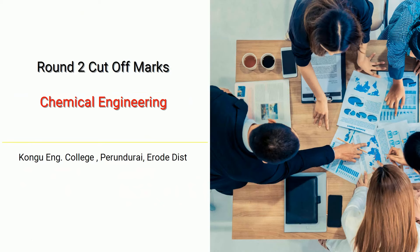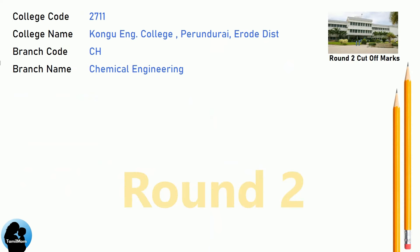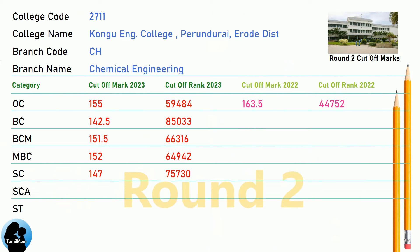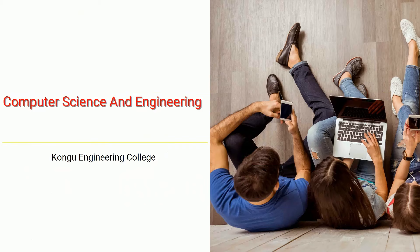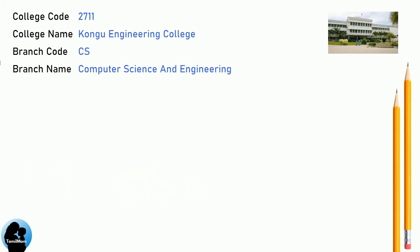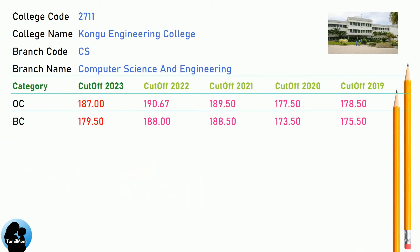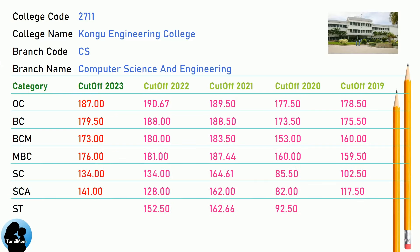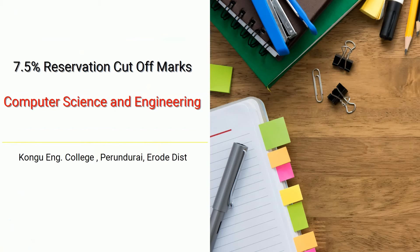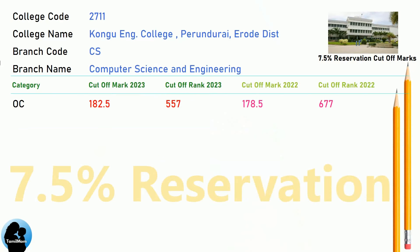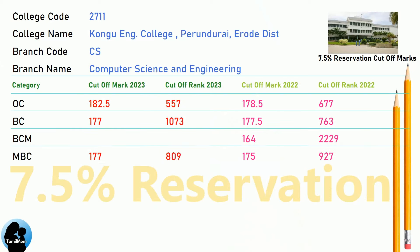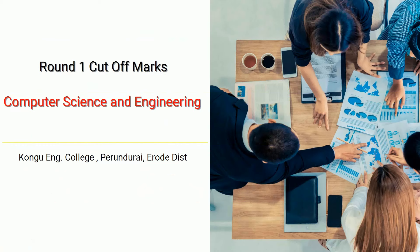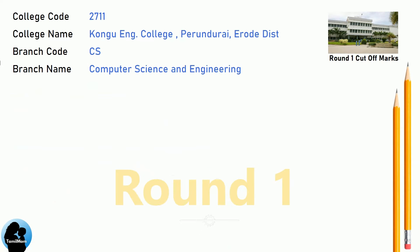DNA Round 2 Cut-Off for Kongu Engineering College in Chemical Engineering. BNA Cut-Off for Kongu Engineering College in Computer Science and Engineering. BNA Round 1 Cut-Off for Kongu Engineering College in Computer Science and Engineering.